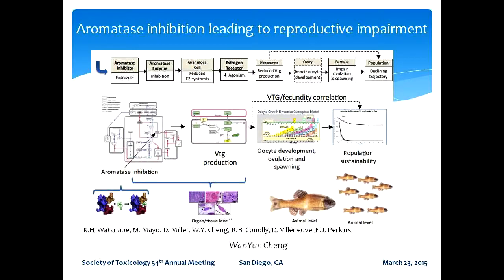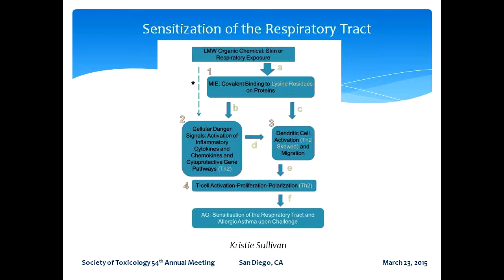The two examples of AOPs we are going to hear about today are, first, aromatase inhibition leading to reproductive impairment — a very well-described adverse outcome pathway with a lot of quantitative information underlying it, to be presented by Wonyoung Chang. And then our second example, presented by Christy Sullivan, is an AOP for sensitization of the respiratory tract — a relatively new AOP, but related to a fairly well-described AOP for skin sensitization.